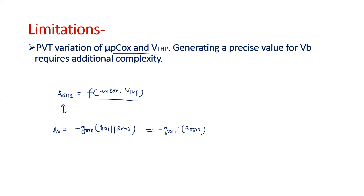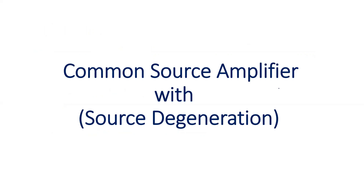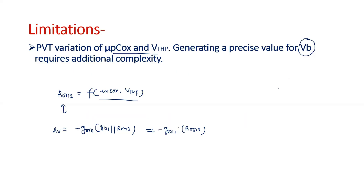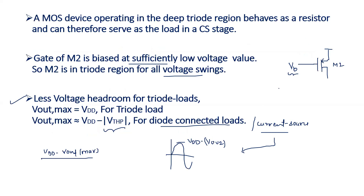The second limitation is that generating a precise value of the biasing voltage V_B is an additional complexity. V_B cannot be directly derived from a simple source; it requires additional circuitry to generate this small biasing voltage. So these are the two limitations of the triode load. In the next video, I will discuss the common source amplifier with source degeneration. This completes the series covering resistor load, diode-connected load, current source load, active load, and now triode load.